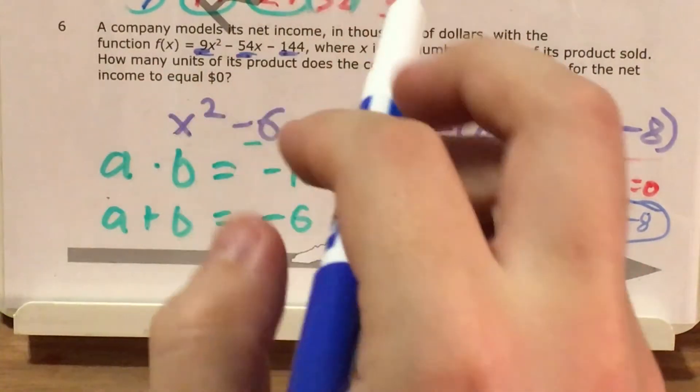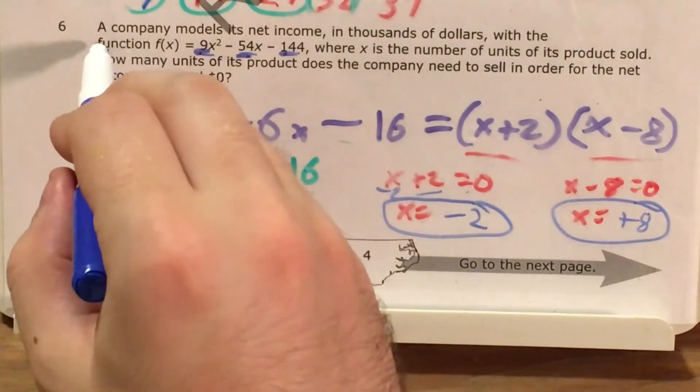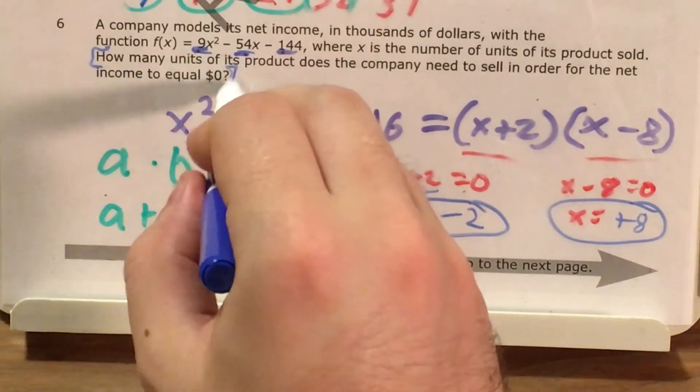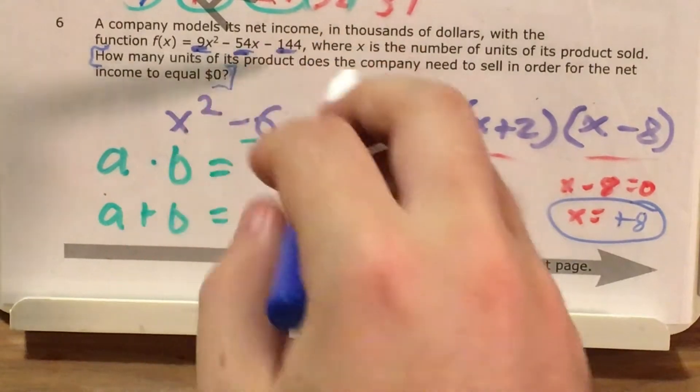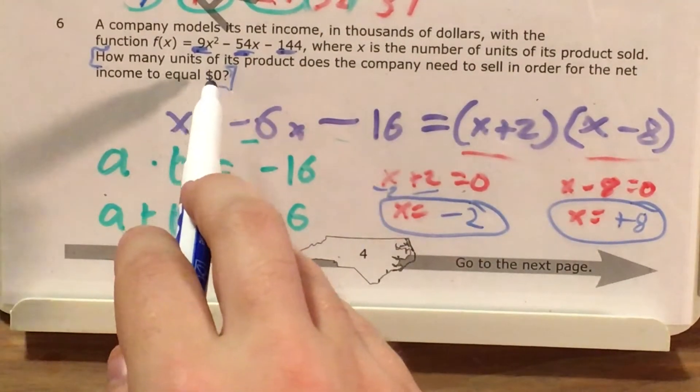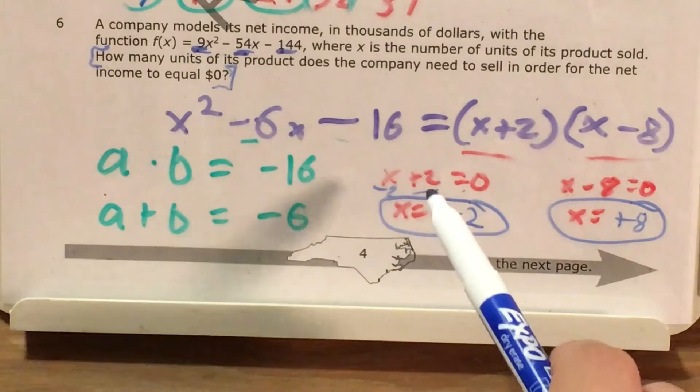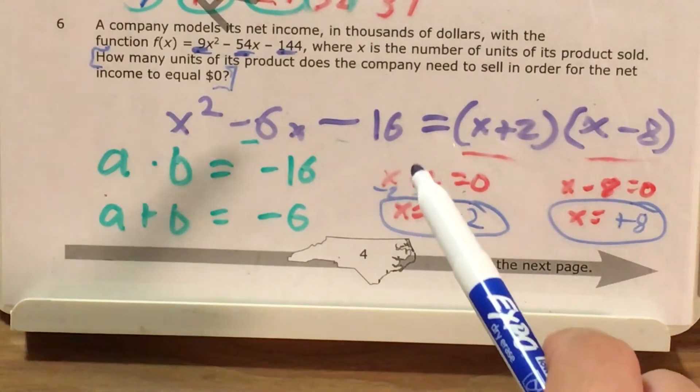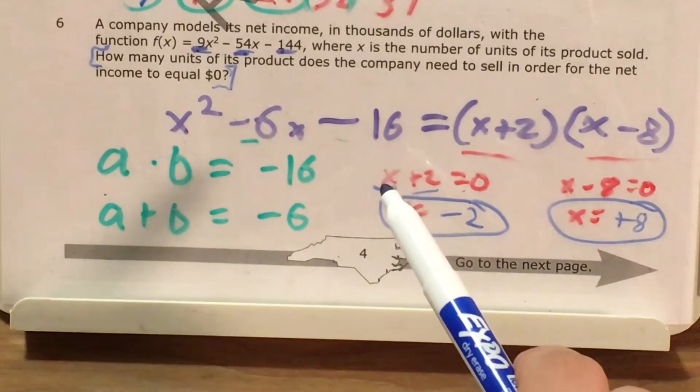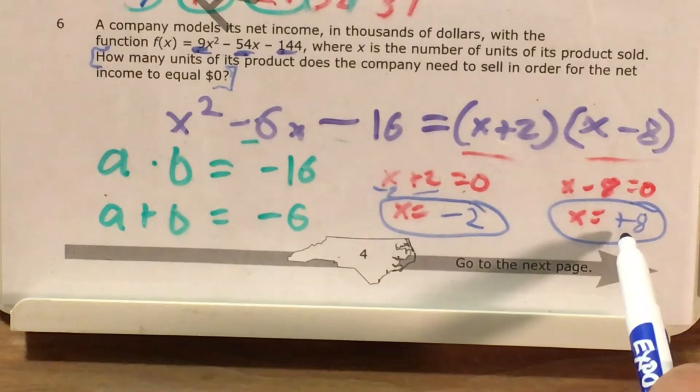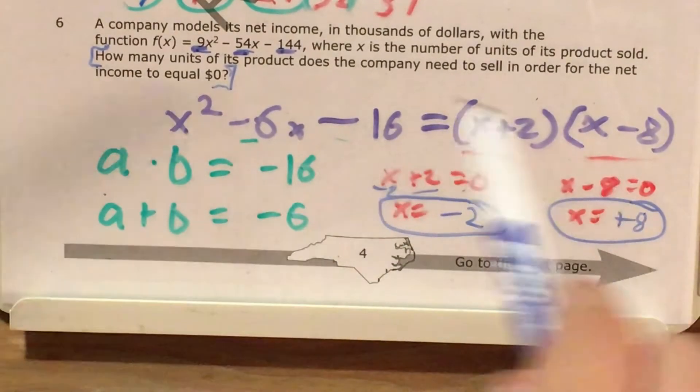But the question is, which one is actually my answer? Well, now to figure that out, I just need to look back at the problem. How many units of its product does the company need to sell in order for the net income to equal 0? And I look at negative 2, and I think, wait, a company can't sell negative products, so it has to be just 8. My answer has to be just 8.